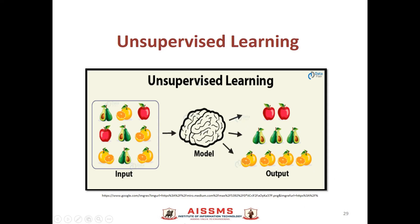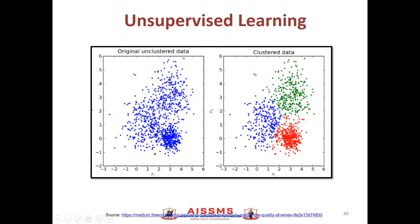That is nothing but unsupervised learning. So in this diagram, you can observe that this is the original unclustered data, where as such no groups, no clusters exist. Whereas, once we give this data to the unsupervised learning algorithm, then it will try to find some common characteristics out of this data and it will form the clusters. So in the second image, now you can observe the clusters — three clusters are formed from this data set.